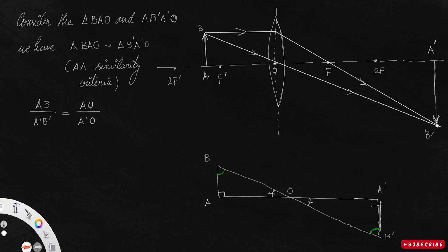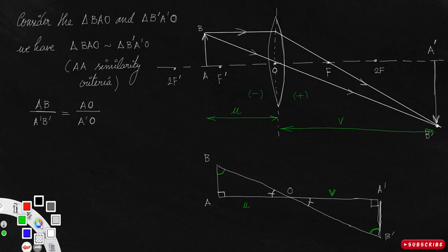We know AO, the distance of the object from the optic center, is usually taken as U. The distance of the image from the optic center is usually taken as V, so OA' is V. All distances to the left of the optic center are taken as negative and to the right as positive — that is according to the new Cartesian sign convention. The object is erect, so I take its height as H. The image is inverted, so I take it as minus H'.